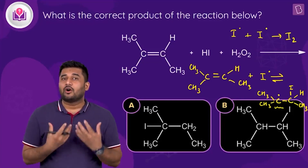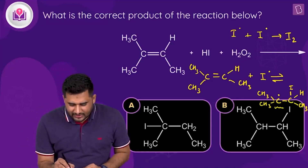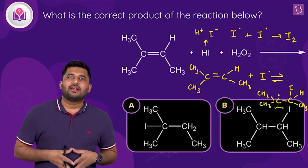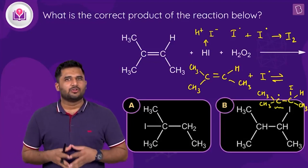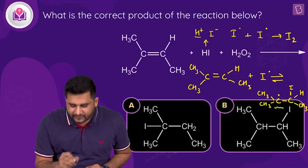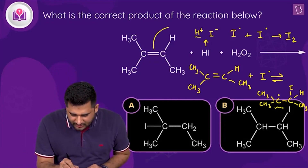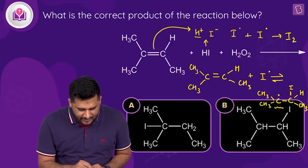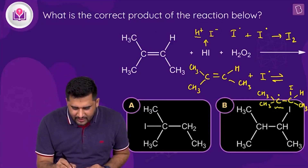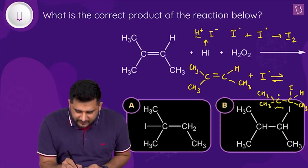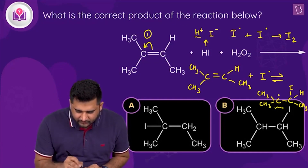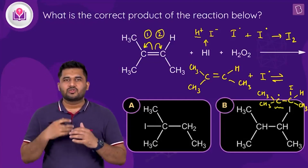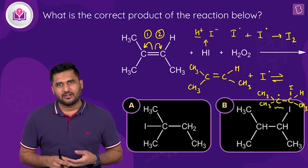So how does the product form in this case? HI dissociates into H⁺ and I⁻, where H⁺ acts as the electrophile and I⁻ acts as the nucleophile. H⁺ will attack first and the pi bond will shift towards it. There are two possible ways in which this pi bond can break — towards one side or the other — and we need to determine which leads to a more stable intermediate.